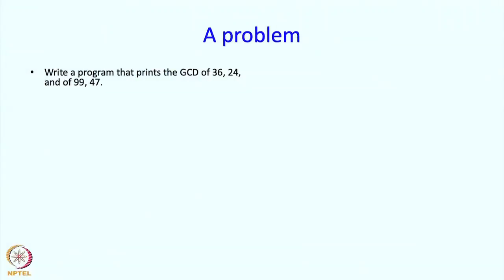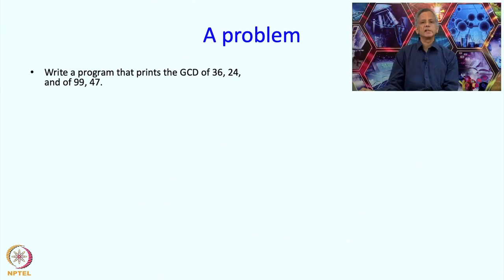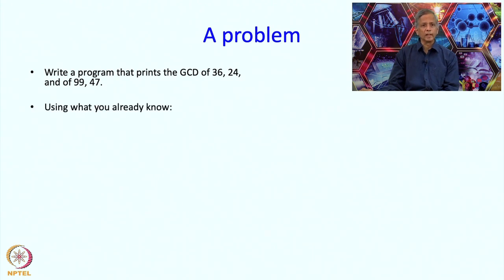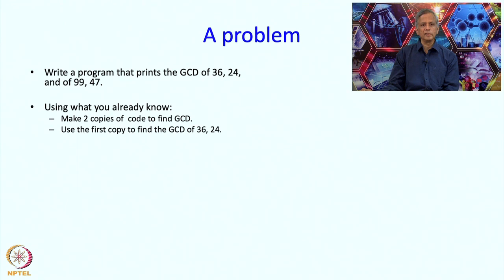Let us begin with a problem: write a program that prints the GCD of 3624 and 9947. In general, you might want a program that finds the GCD of one set of numbers, does something, then finds the GCD of another set of numbers, and so on. Using what you already know, you might make two copies of the code written earlier for finding the greatest common divisor. The first copy would find the GCD of 3624 and the second the GCD of 9947. Here is what that might look like.